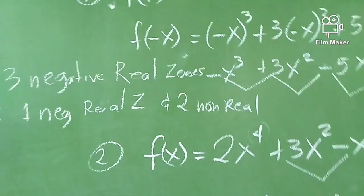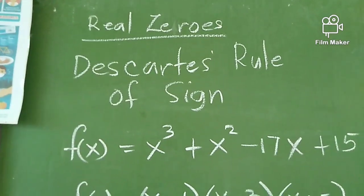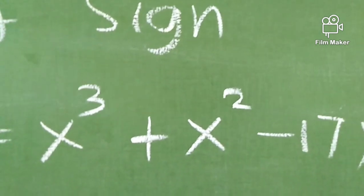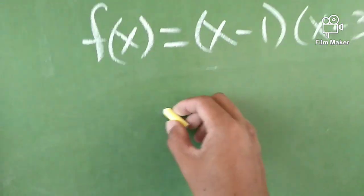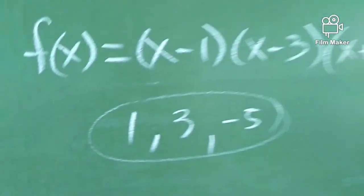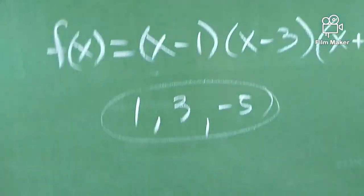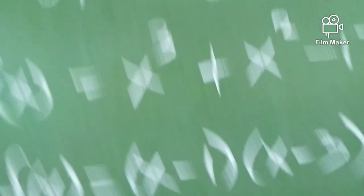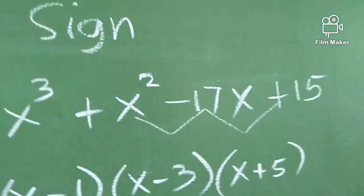Let's go back to our previous example from the earlier video: x³ + x² - 17x + 15. These are the real zeros we found: 1, 3, and -5. Those three are the real zeros we computed earlier. Now let's verify — we saw two interchanges of sign for positive x, giving two positive real zeros.